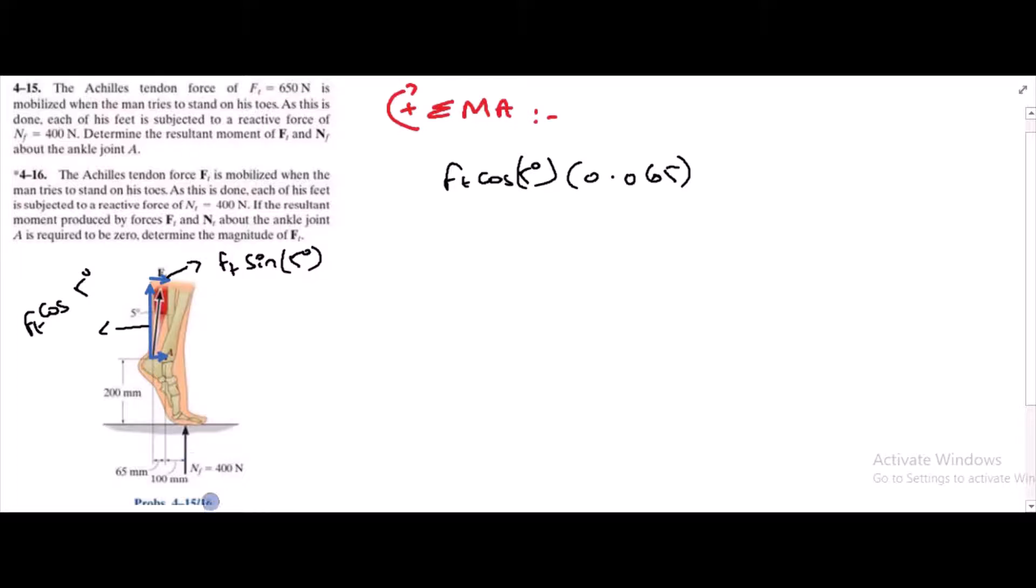Then we have one more force which is the reaction force and it has a moment arm of 100 mm from point A and it is trying to rotate about point A counterclockwise. So I am taking it as negative. It is negative 400 into 0.1.